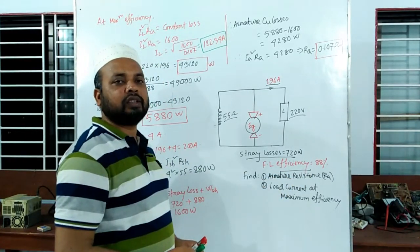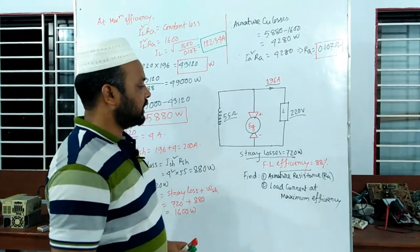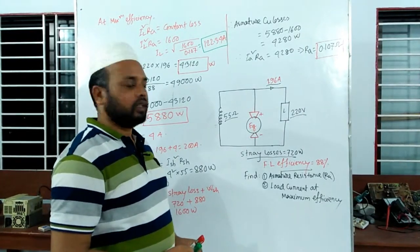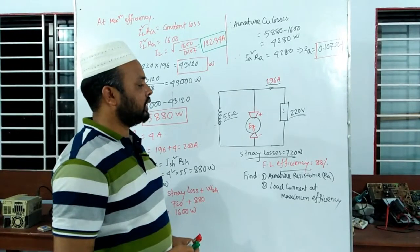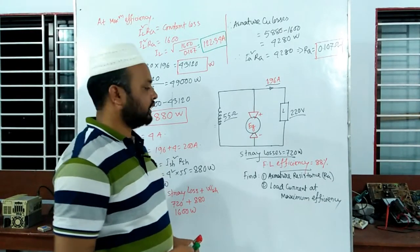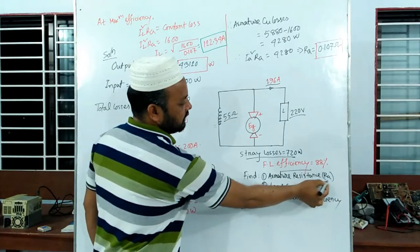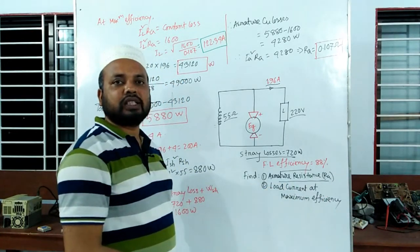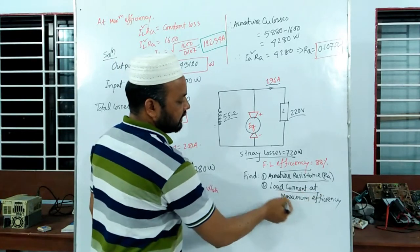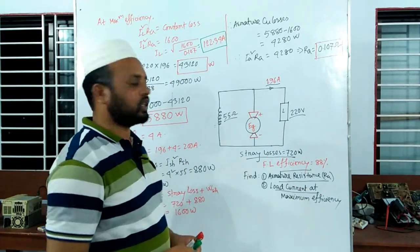Full load efficiency is related to stray loss. The first thing is that the prime mover provides the power. The RMS resistance is not very low. The load current is at maximum — this is the first thing we have to consider.